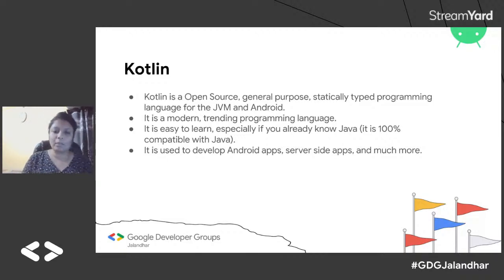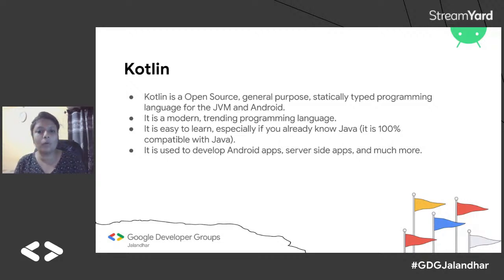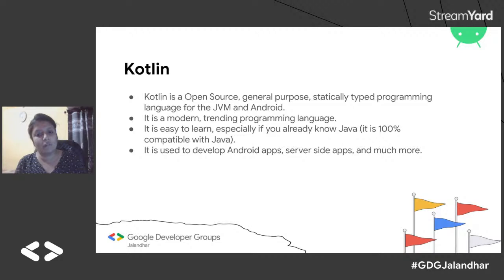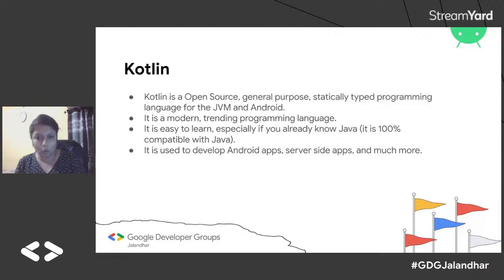Kotlin is open source and multi-purpose — like Java, we can make mobile apps, APIs, and backends with it. It's modern and trending. If you already know Java, switching is very easy because Kotlin is 100% compatible with Java. If you write a function in Java and another class in Kotlin, you can use the Java function in the Kotlin file and vice versa. So Java and Kotlin are 100% interoperable.